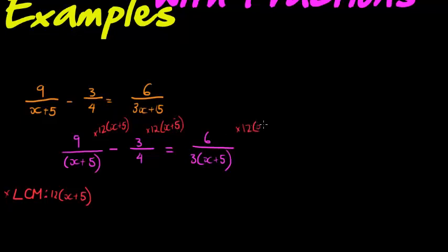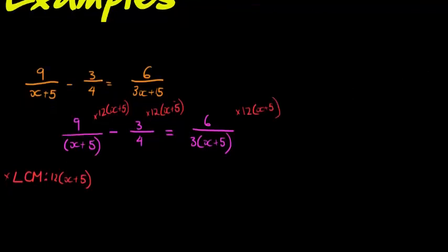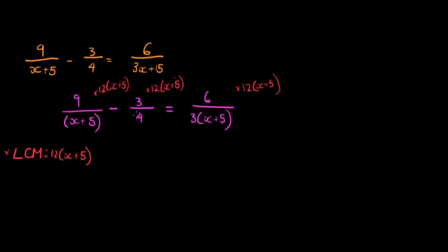Now when we do so, we see that this first one, the X plus 5 cancels with the X plus 5, so we've got 9 times 12 which is 108. In the second one, we've got the 4 cancels and it all divides into the 12 - 3 gets left over. So it's negative 3 times 3, which means it's negative 9, and that negative 9 gets multiplied into this bracket X plus 5.